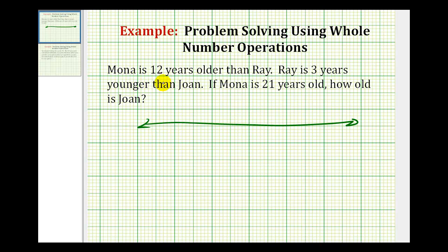It says Mona is twelve years older than Ray. So on the number line, since Mona is older, Mona would be twelve units to the right of Ray. If we let this point right here represent Ray's age, since Mona is twelve years older, we'd have to go over twelve units to represent Mona's age.